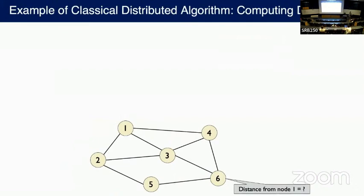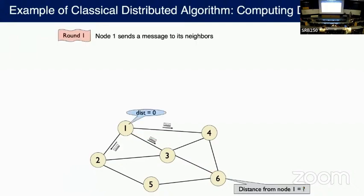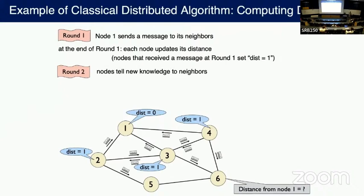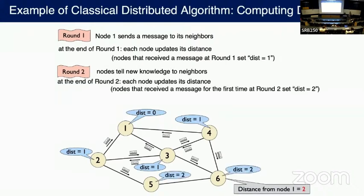Let's see a concrete example: computing distances. Assume you want to compute the distance between node one and node six. The answer is two, because there are two hops. Node one first sends a message to its neighbors. All nodes receive a message and know they are distance one from node one. Then all nodes tell the new knowledge to their neighbors. At the end of round two, all nodes that receive a message for the first time know they are distance two from node one. So this problem can be solved in two rounds.